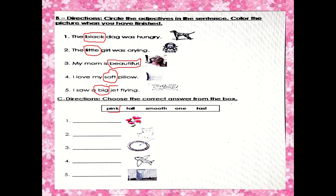Question number one: here is a pink flower, so the answer is pink. This one is a cat — how many? One. So you will write one here. And this one — look at this — this is a mirror, the arrow goes to the mirror, the glass. It's smooth — very smooth. And this one is an airplane or a jet — an airplane is fast. And this building is Kingdom Tower. Kingdom Tower is one of the tallest buildings in Saudi Arabia, so this is tall.